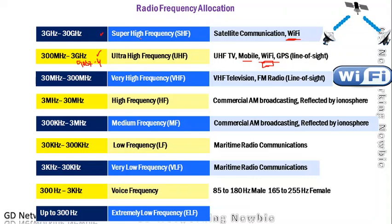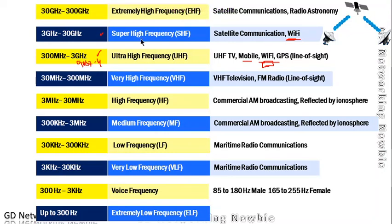The final range is Extremely High Frequency (EHF), from 30 gigahertz to 300 gigahertz. This is used by satellite communication and radio astronomy — radio astronomy involves sending data to stars, taking pictures, or whatever signals are exchanged in astronomy. These were the different frequency ranges for radio frequency signals used in different applications.